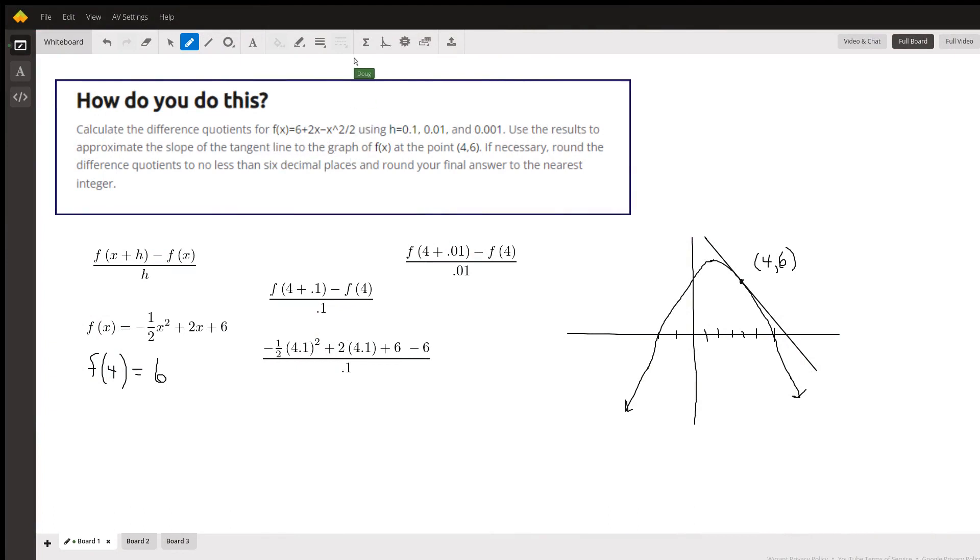You're given the function f(x) = -1/2 x² + 2x + 6, which is a downward opening parabola with a vertex at (2, 8). You're supposed to use a difference quotient with h equals these values to estimate the slope of the tangent line at the point (4, 6).